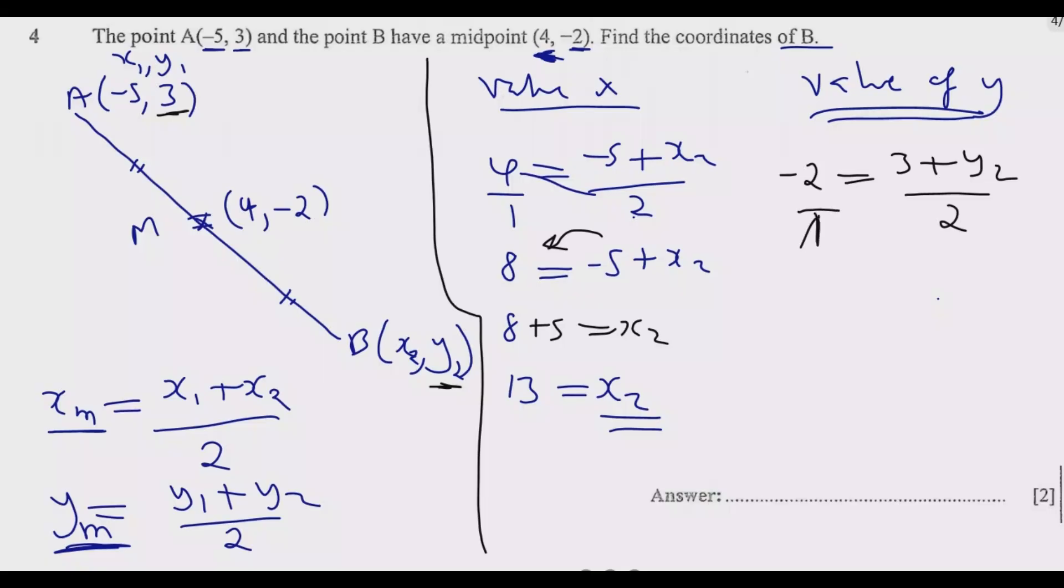Then we do cross multiplication like we did. So it will be negative 2 times 2 is negative 4, equals 3 plus Y₂. Then minus 4, the moment this 3 crosses the equal sign it becomes negative, so it becomes negative 3 equals Y₂. Then I simplify, I'm going to get negative 7 equals Y₂.